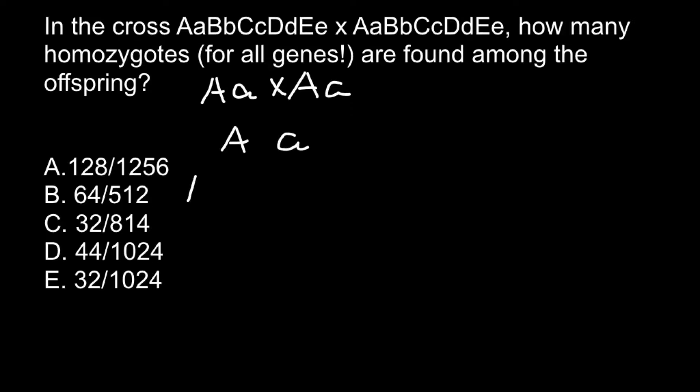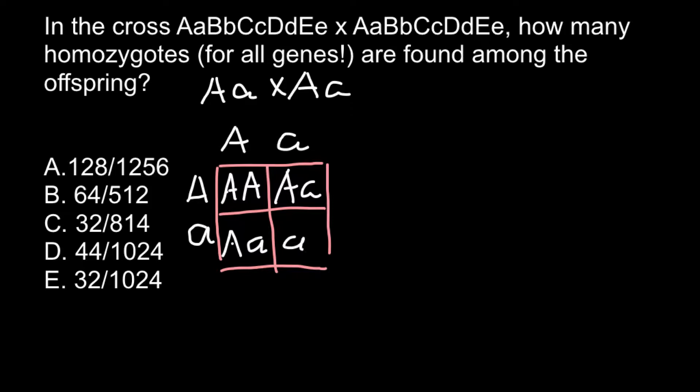We build a simple Punnett square and we expect the following genotypes in the offspring: capital A capital A here, capital A small a here, capital A small a here, and small a small a here.